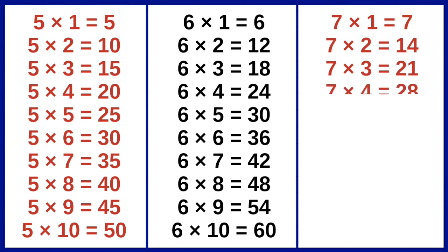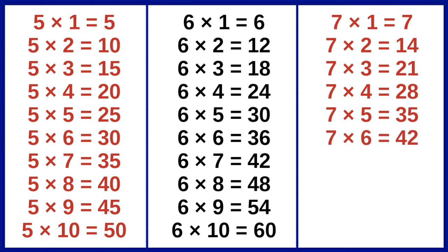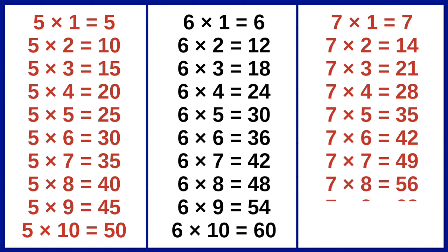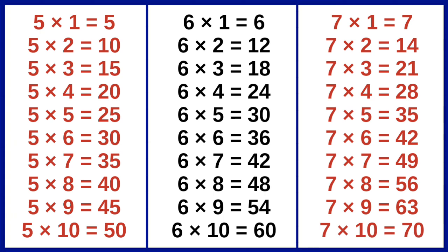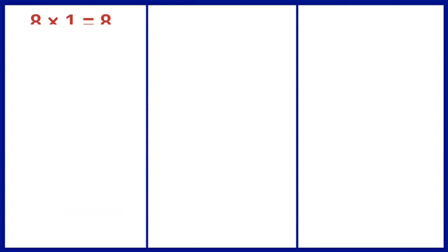7 7s are 49, 7 8s are 56, 7 9s are 63, 7 10s are 70.